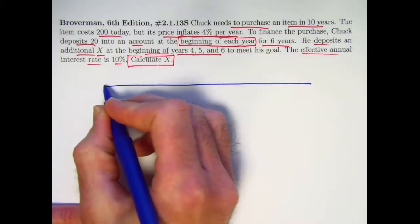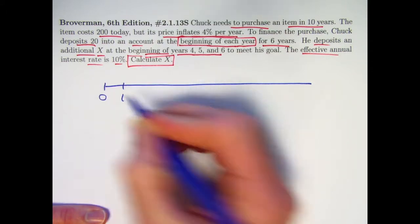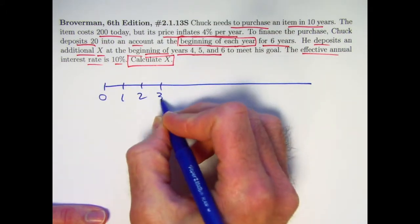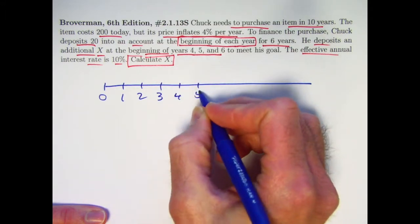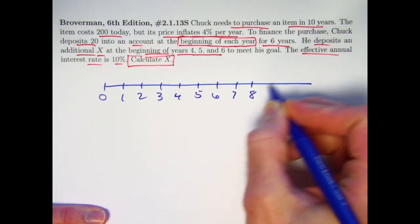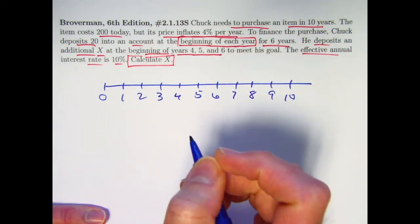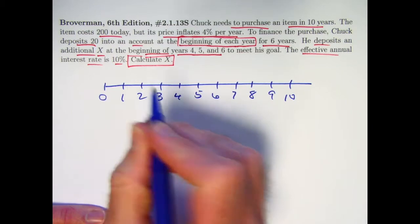Draw a number line. Here's time zero. I think I'd better put all 10 years on this. Time 1, 2, 3, etc. All right, be careful.